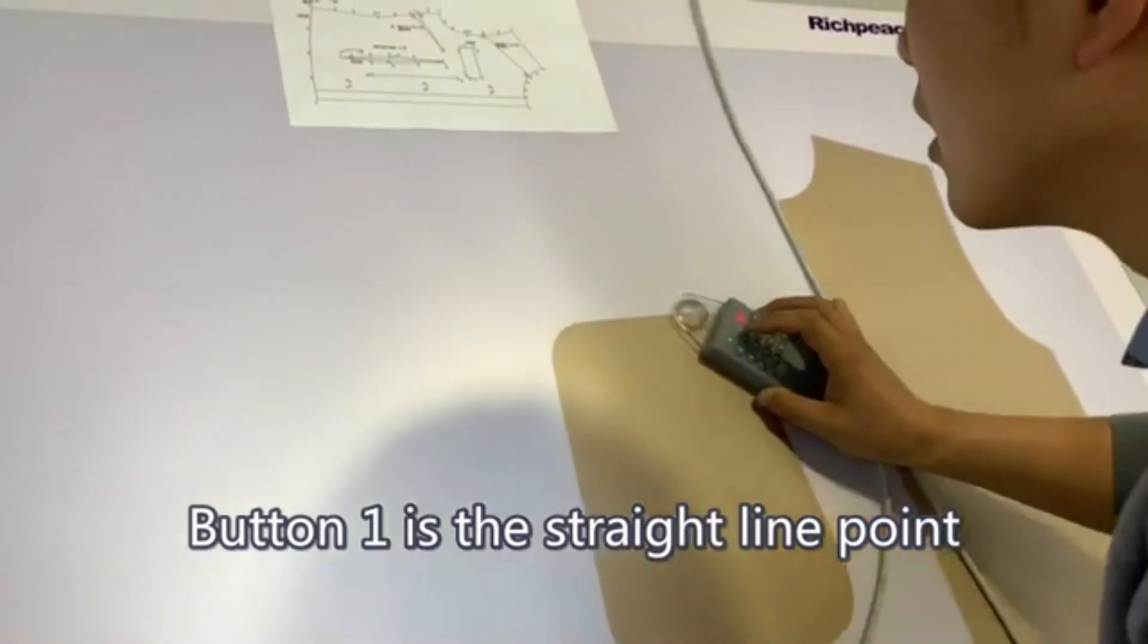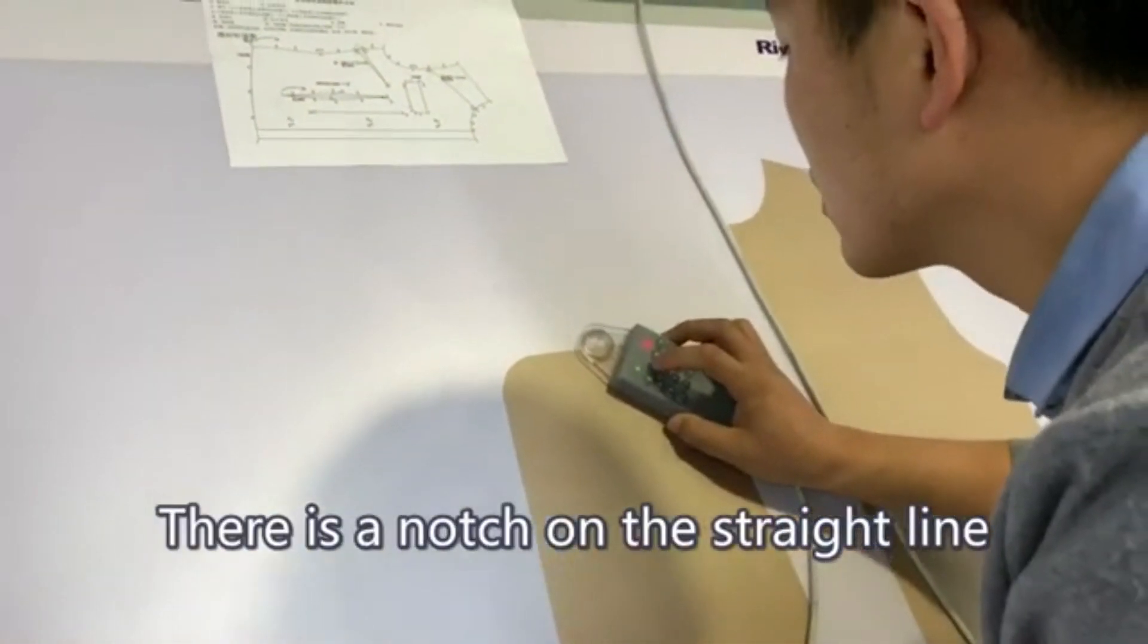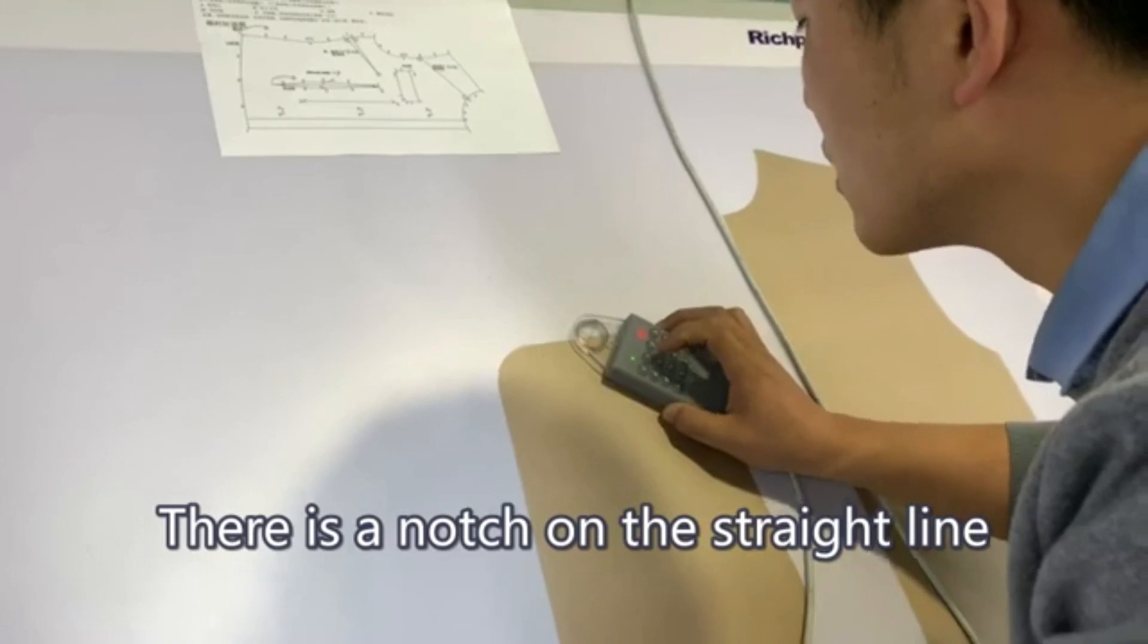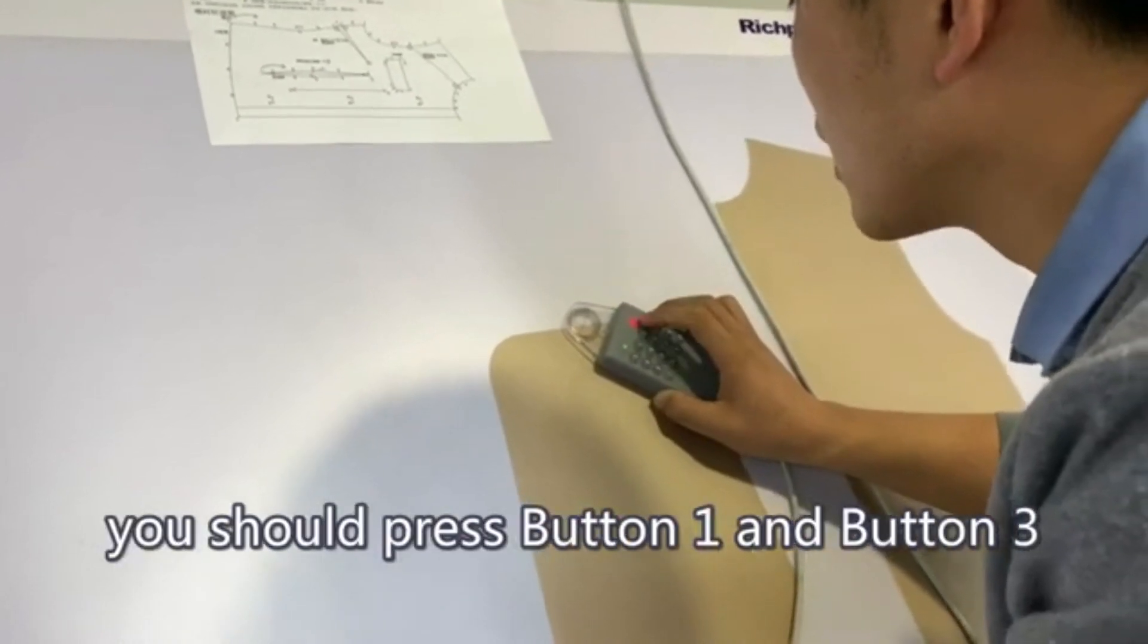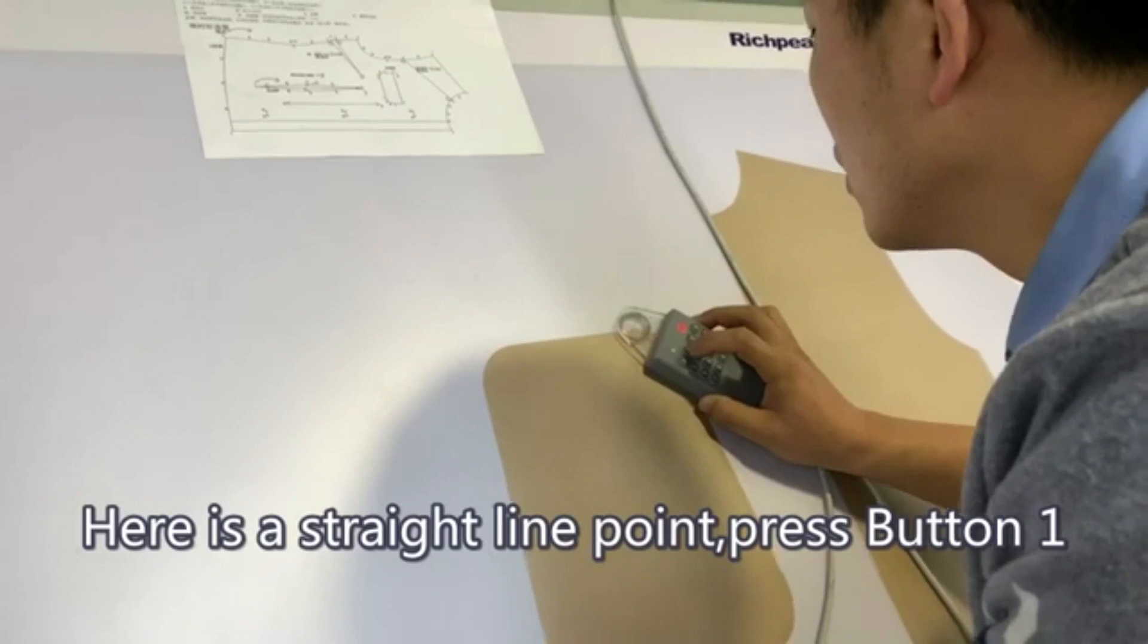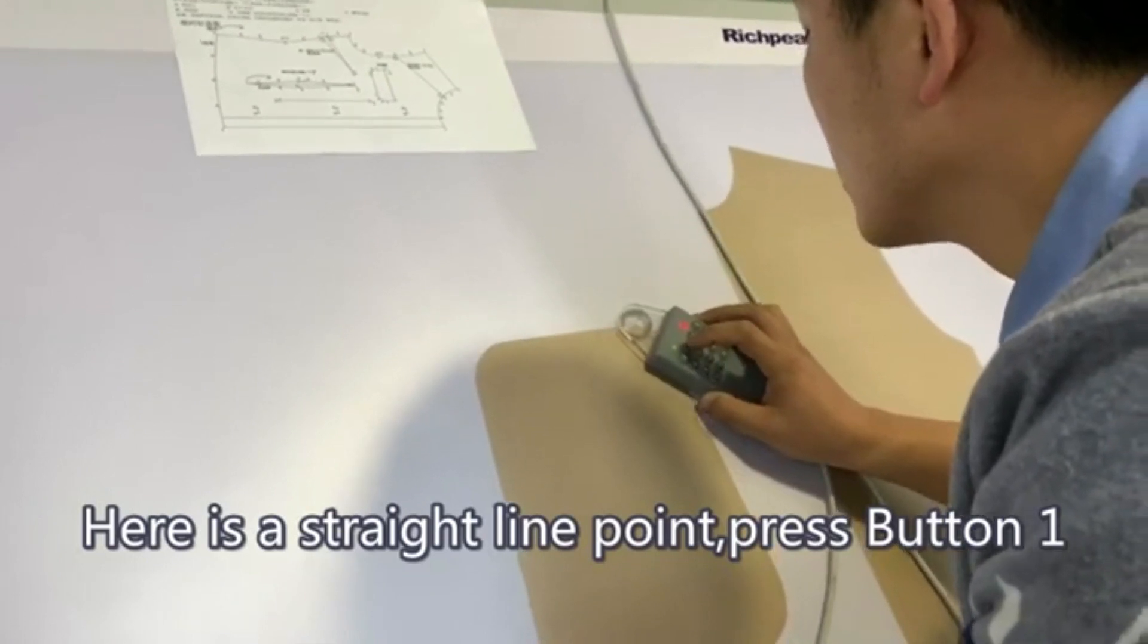Button 1 is the straight line point. There is a notch on the straight line. You should press button 1 and button 3. Here is a straight line point, press button 1.